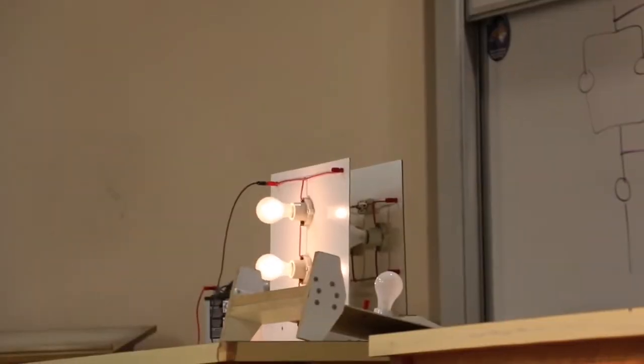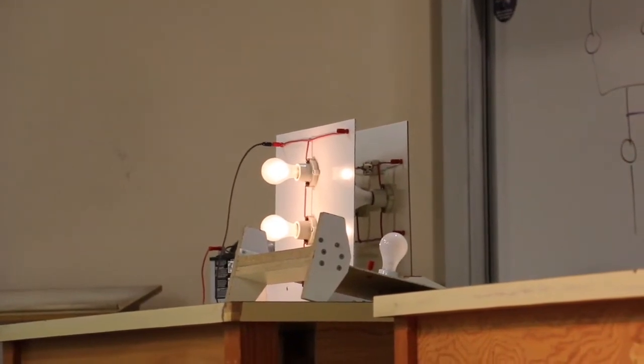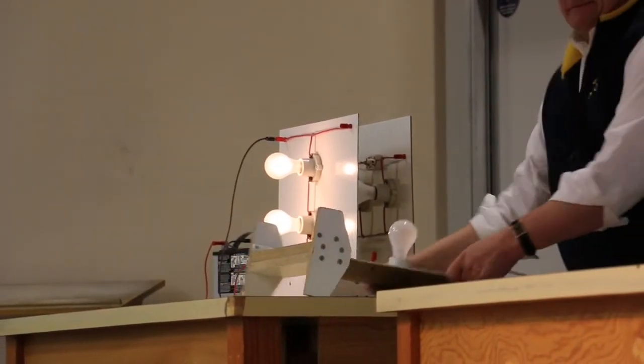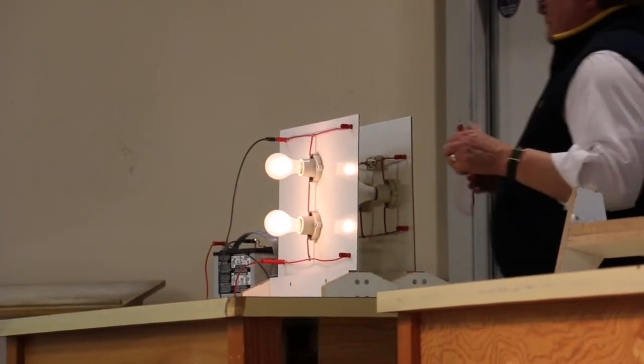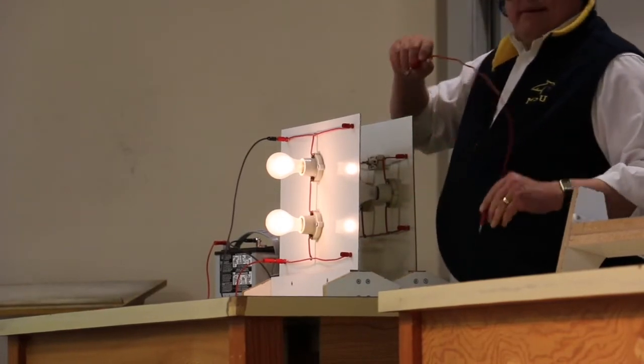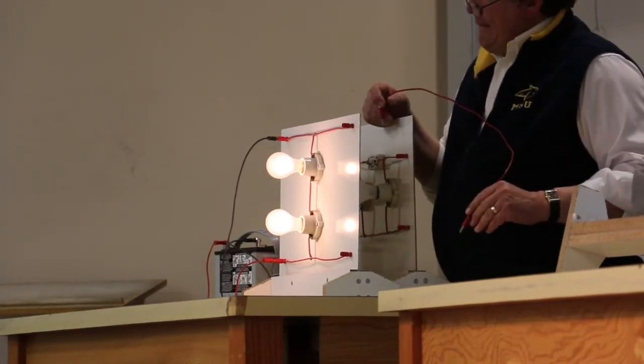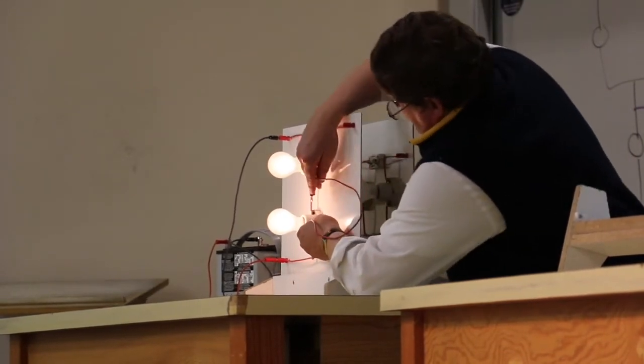what's going to happen to bulb B, and what's going to happen to bulb A? Tell your neighbor real quick. It's just a wire. B is going to go out. Here's the overall resistance in the circuit, so A is going to get rid of it.